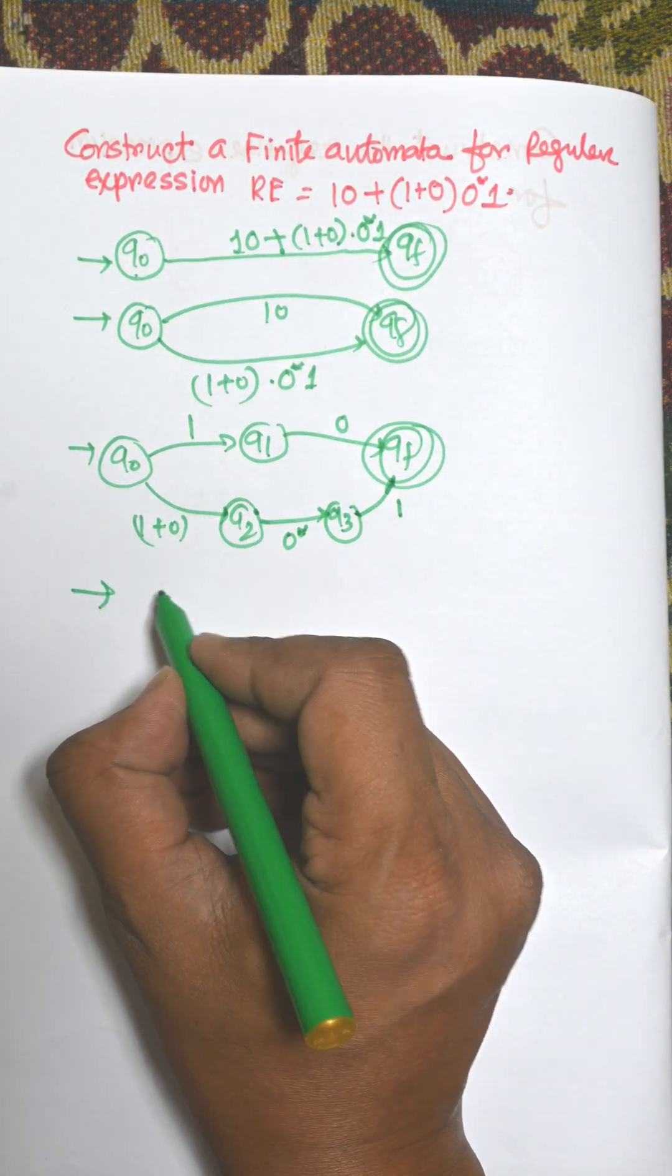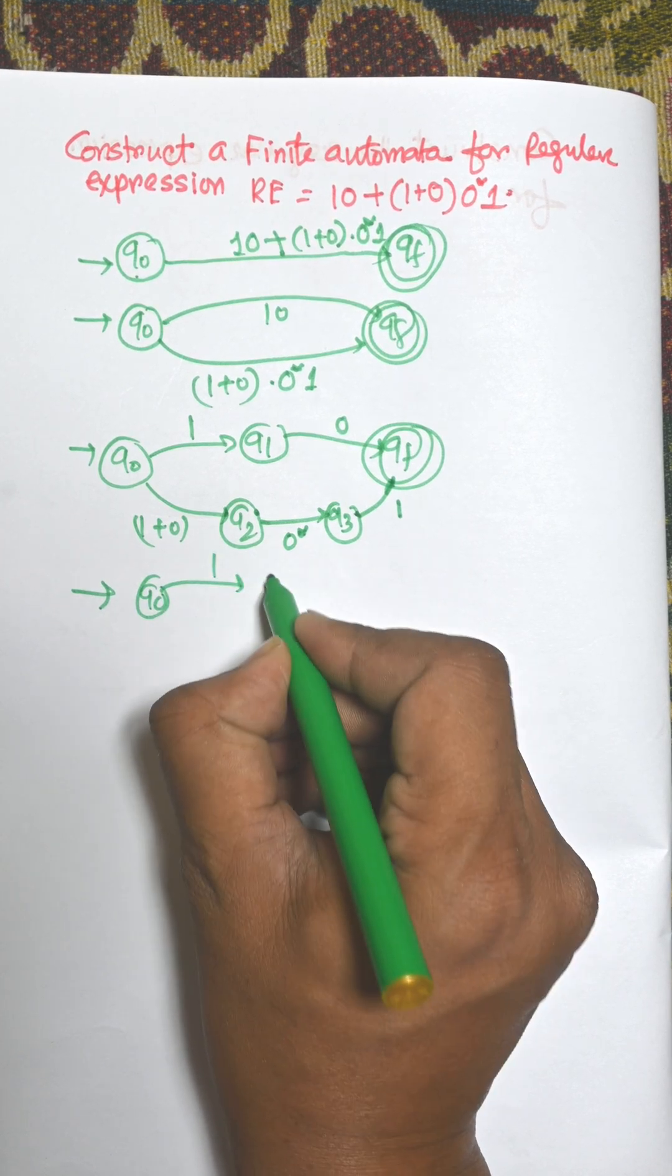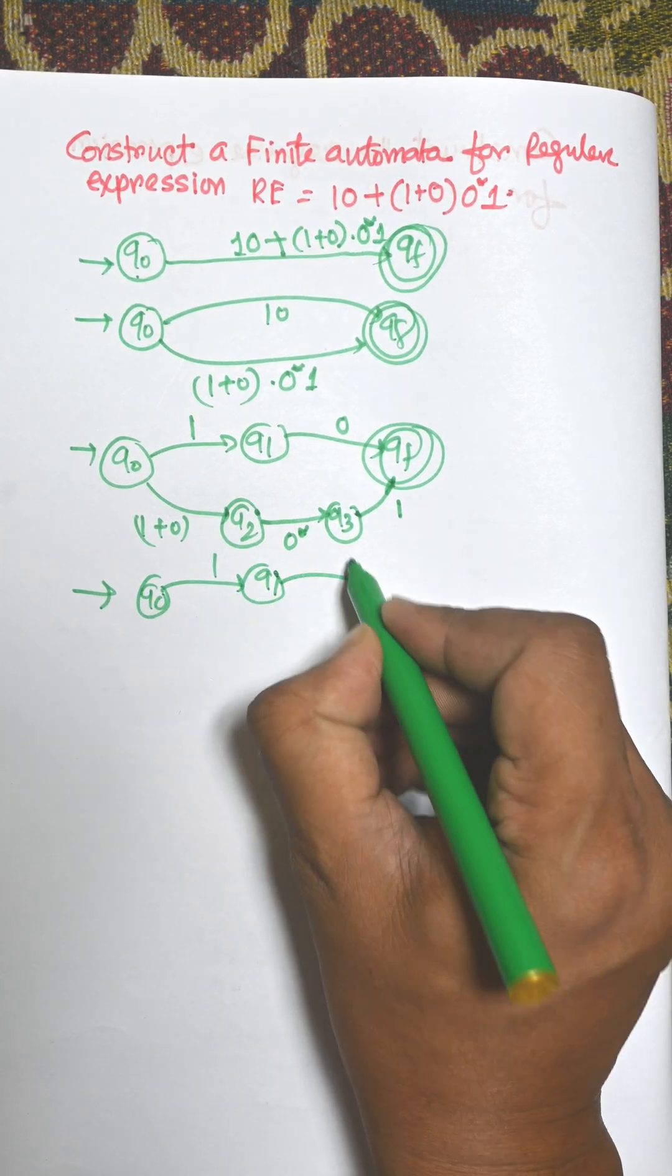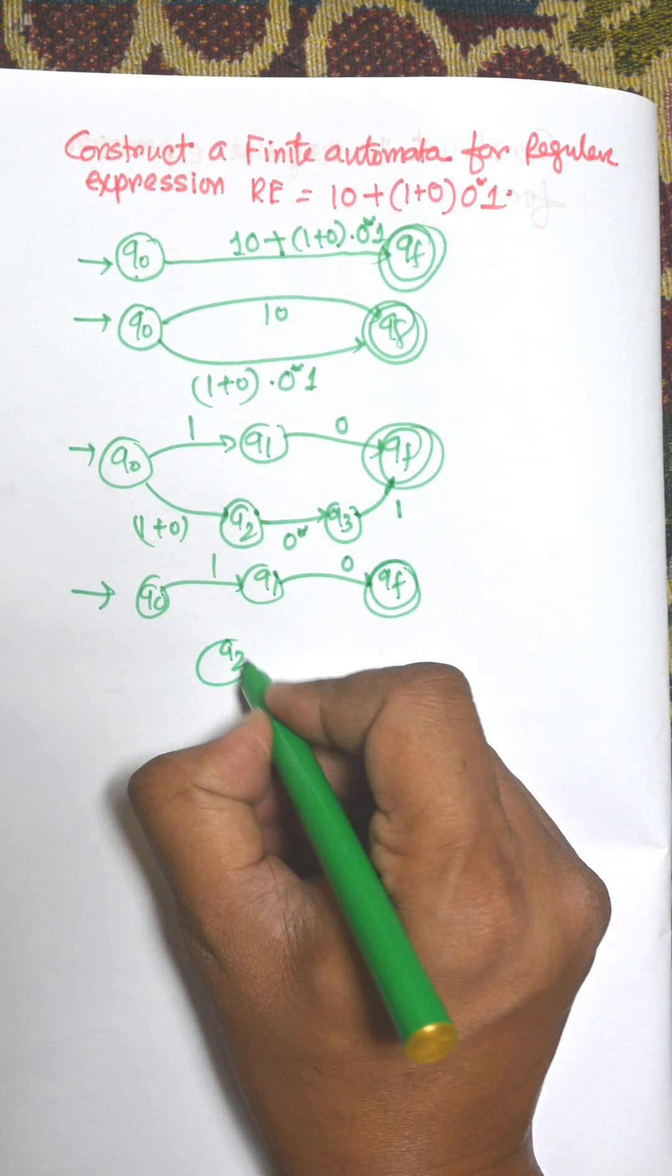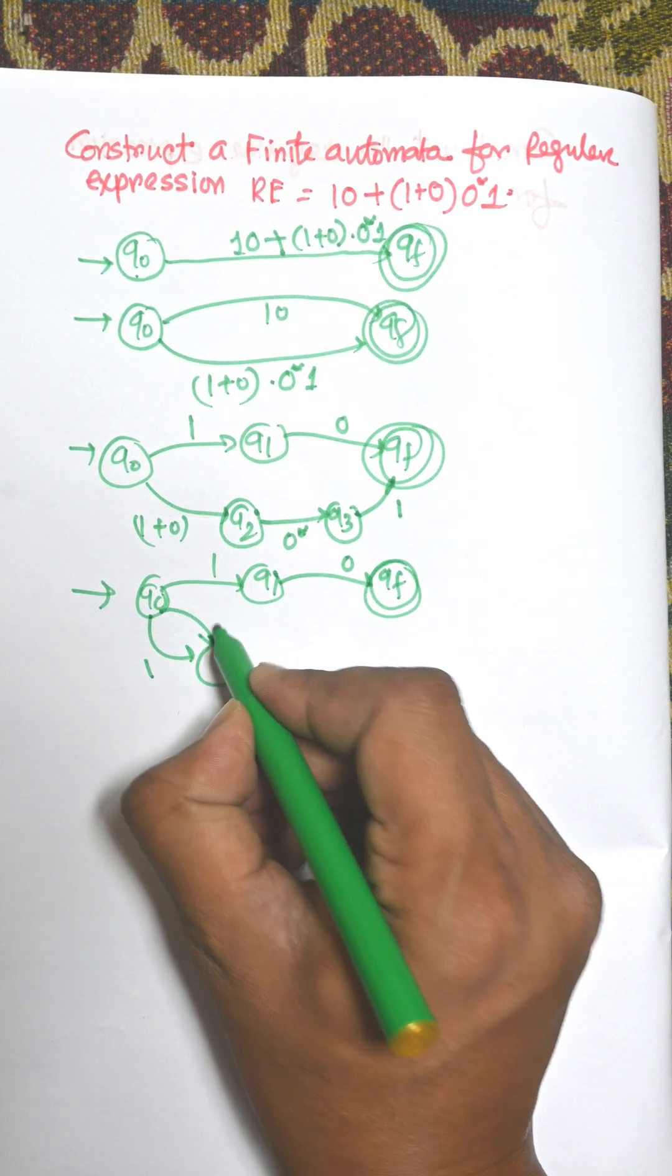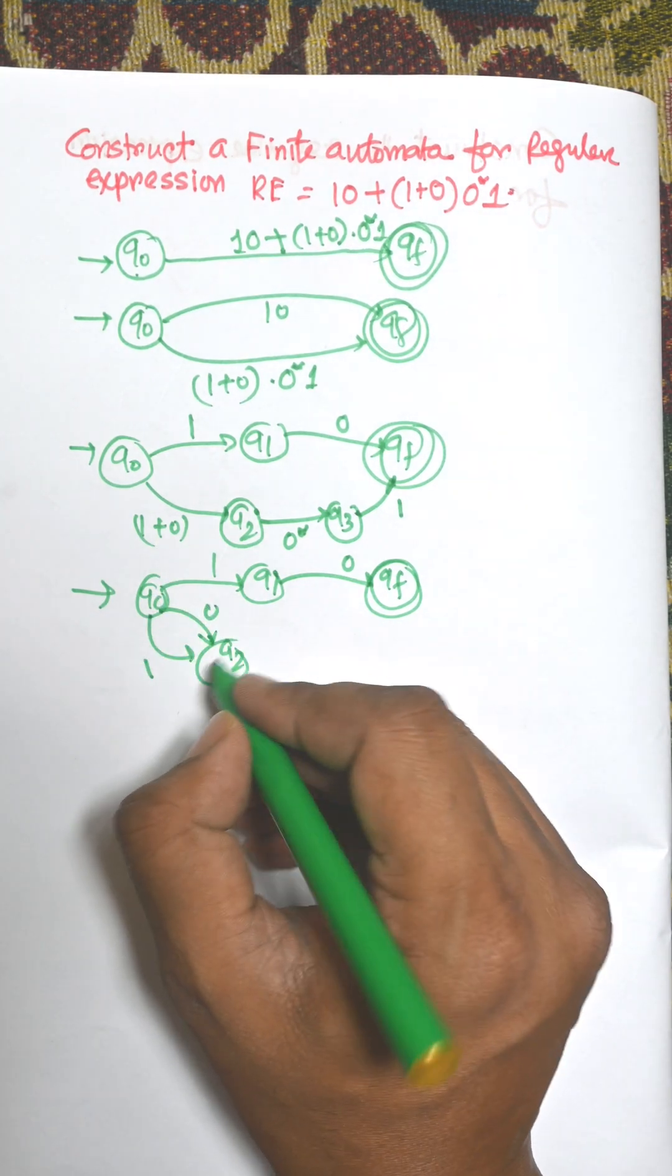Now this is a plus, so q0 to 1 this is q1 and 0 to qf. From q0 to q2 there are two paths: for 1 and for 0. For union there are two separate paths.